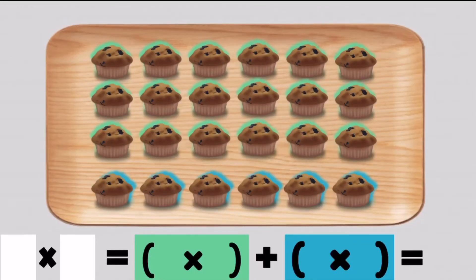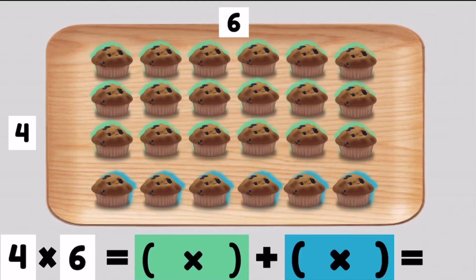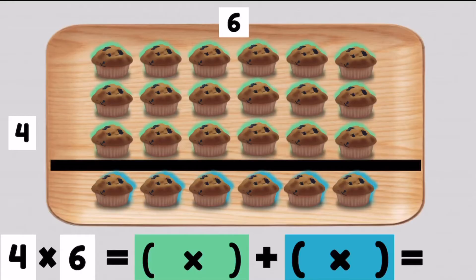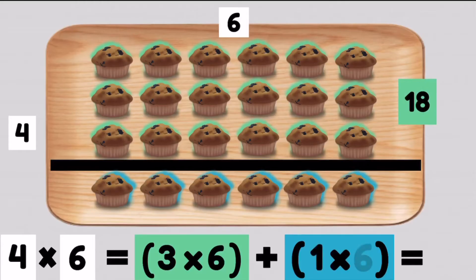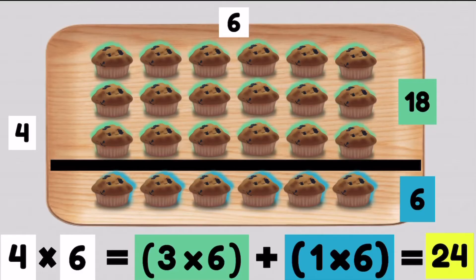Now this array has four rows going across with six muffins on each row. That means that the multiplication sentence for this array is four times six. Now if we break up this array into two smaller arrays, we have a green array and a blue array. For our green array we have three rows going across, so we know that's three times six muffins on each row. Now three rows of six muffins makes 18 muffins. Our blue array has one row of six muffins — one times six is six. Now we can add the product of three times six which is 18, plus one times six which is six, and that gives us 24. So we know that four times six equals 24 because 18 plus six makes 24.